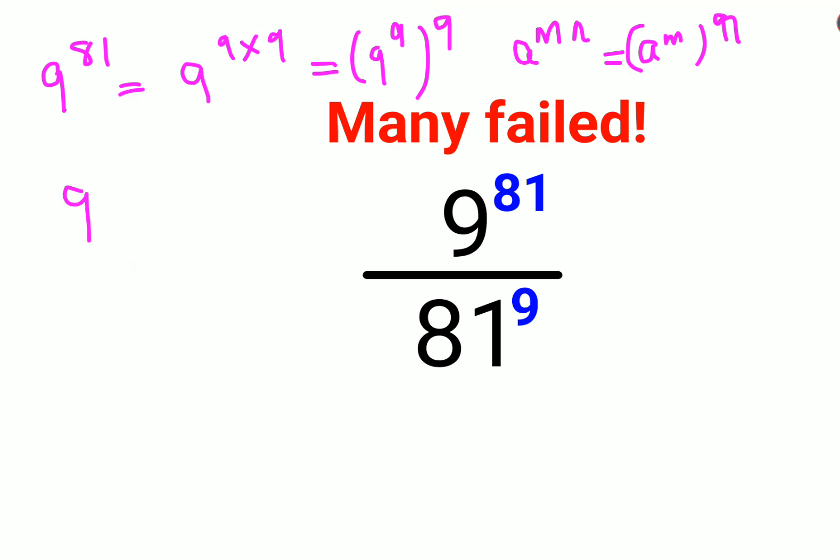So I can now say this becomes 9 raised to 9, the whole raised to 9, upon 81 raised to 9, which can eventually be written as 9 raised to 9 upon 81, and everything is raised to 9.